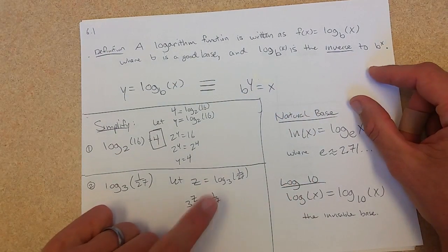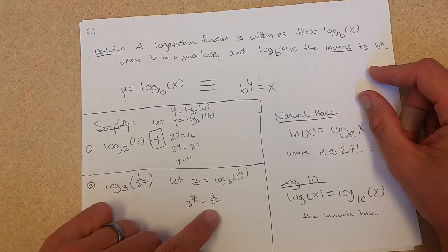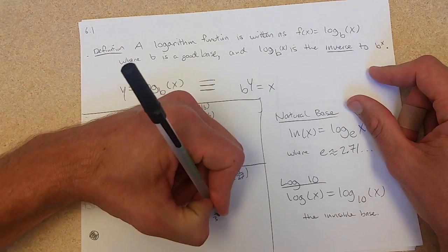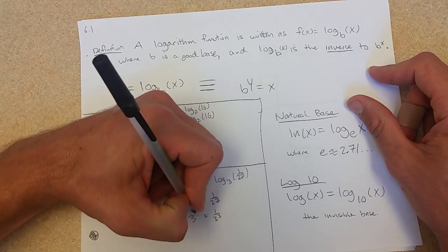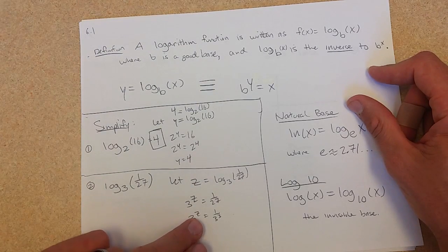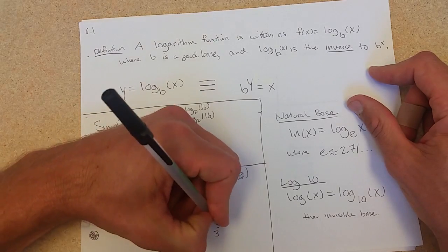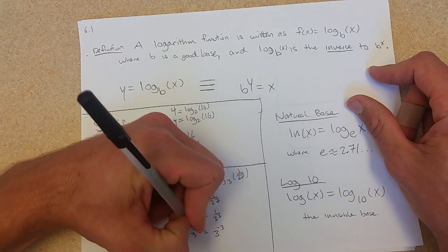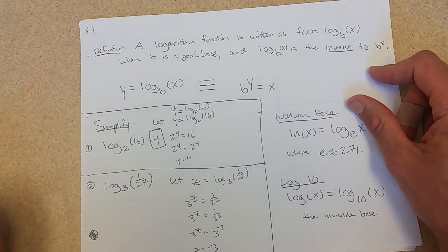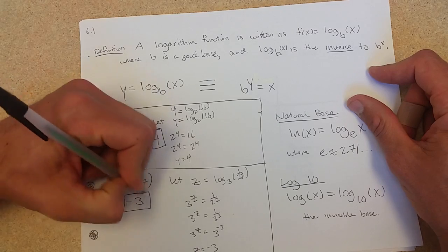27 is 9 times 3, and 3 times 3 is 9, so this is 3 cubed. I can't quite write down what z is, but I'll use the reciprocal property: 3 to the negative third. So z equals negative 3, and that's what we started with. This equals negative 3.